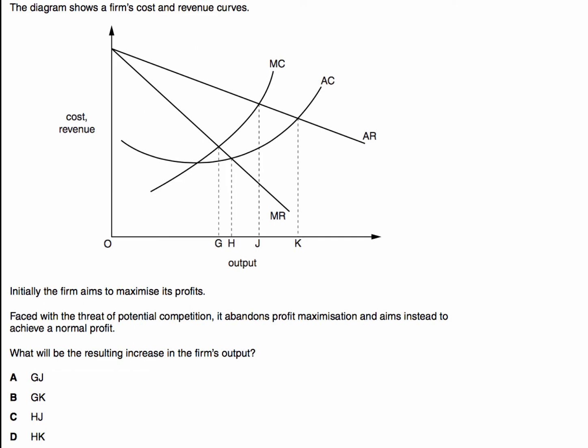Okay, so here we have a contestable market. Normally the firm would profit maximize and produce an output of G where MC meets MR. So initial output with profit maximization, marginal cost meets marginal revenue, that gives an output of G.